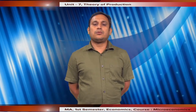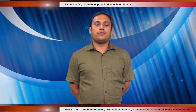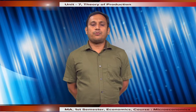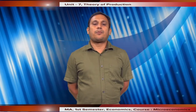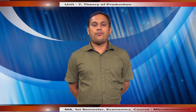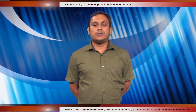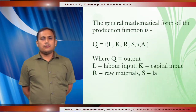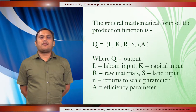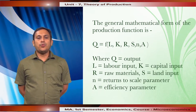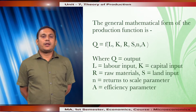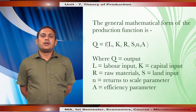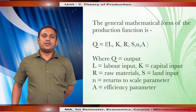If x1, x2, ... xn are the quantities of input and q is the maximum attainable output, then the production function can be written as q is a function of the inputs used: x1, x2, ... xn. The general mathematical form of a production function is q is a function of labor, capital, raw materials, land input, return to scale parameter, and efficiency parameter.